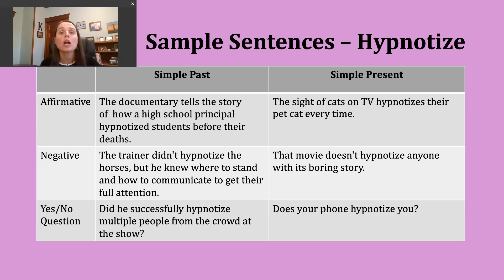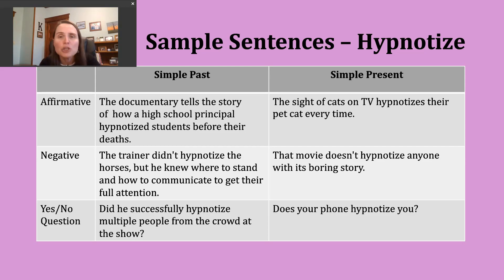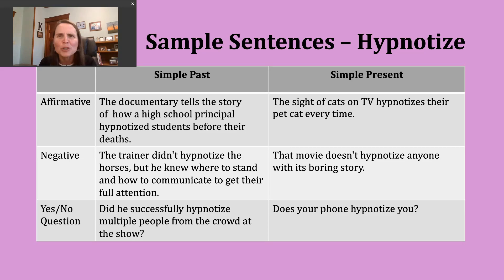We use the simple past tense to talk about completed actions that occurred at a known point in the past. Not every sentence is going to have a time signal telling us when the action happened — it's more commonly implied as part of a conversation or a longer passage. If you asked me what I did yesterday, I would use the simple past tense because we're talking about a known point in the past, and it's understood throughout the description.